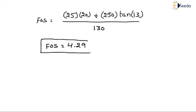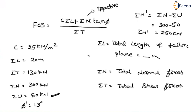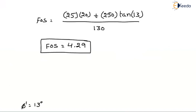So this is the factor of safety with respect to shear strength. The key point: when pore water pressure or neutral forces are given, we must always take effective angles and effective normal forces. Effective forces must always be considered while using normal forces or normal stresses. Total values are used while dealing with shear forces or shear stresses. From the problem, first understand whether the soil is under dry or submerged condition, and then use the appropriate parameters. Thank you.